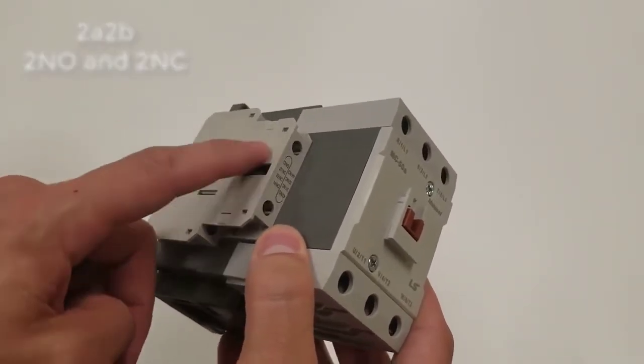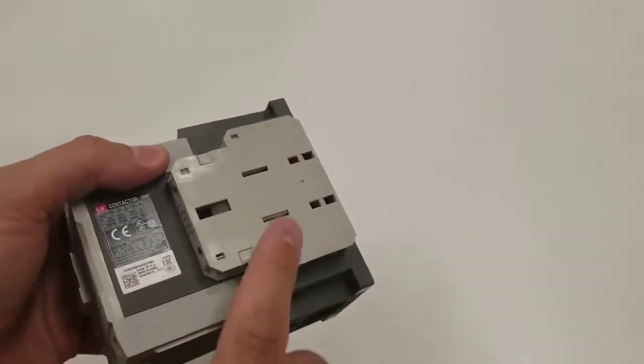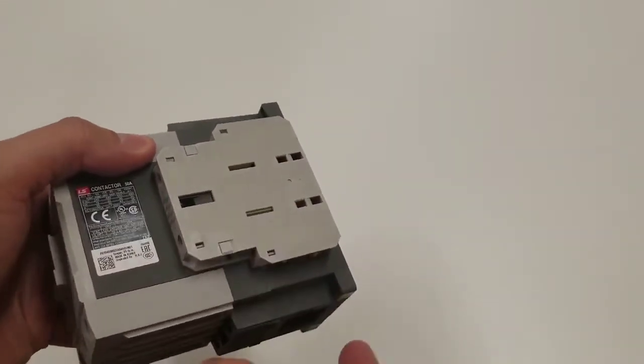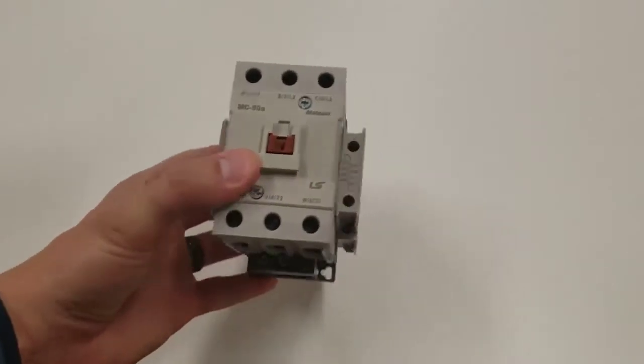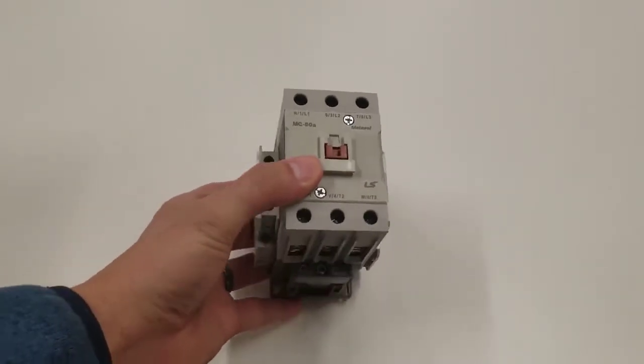So there's one normally open, one normally closed on this side. And then on this side you have one normally open, one normally closed as well. So this is our standard stock. This specifically is an MC 50A.